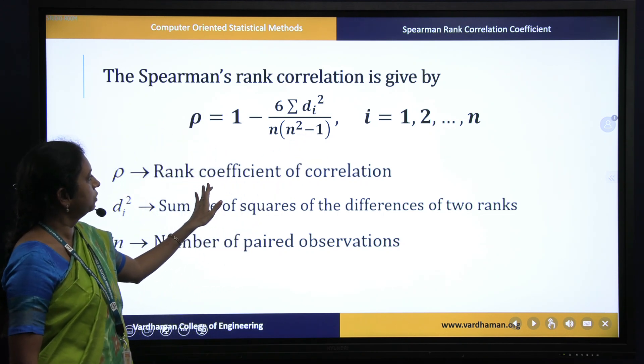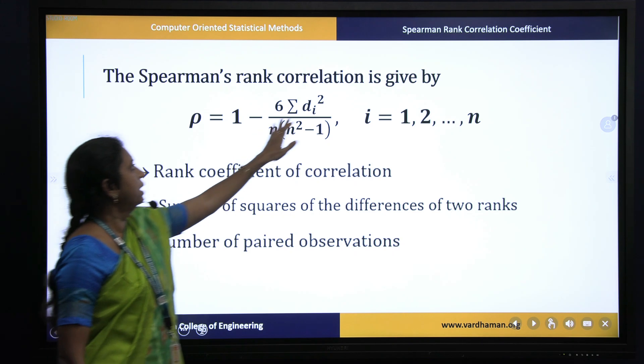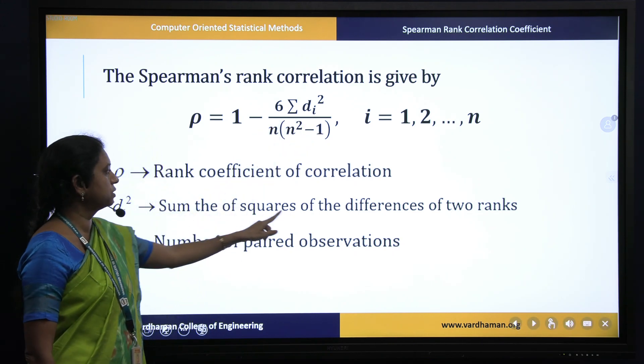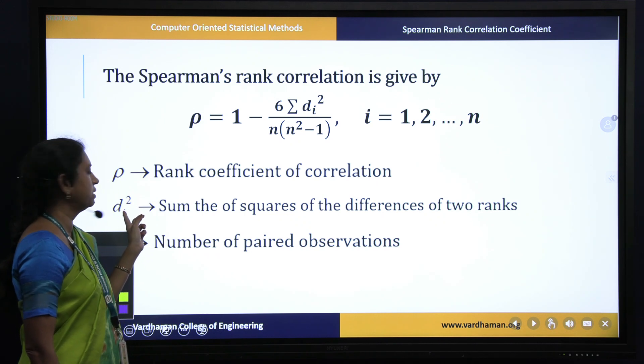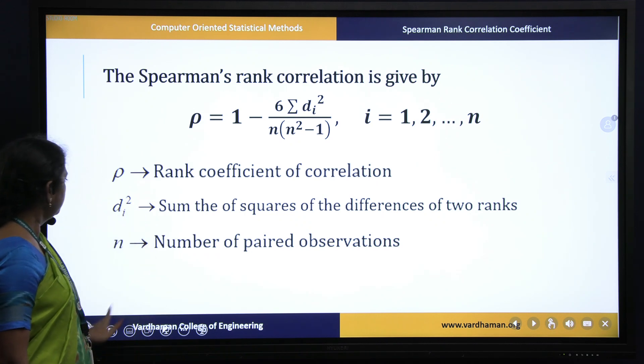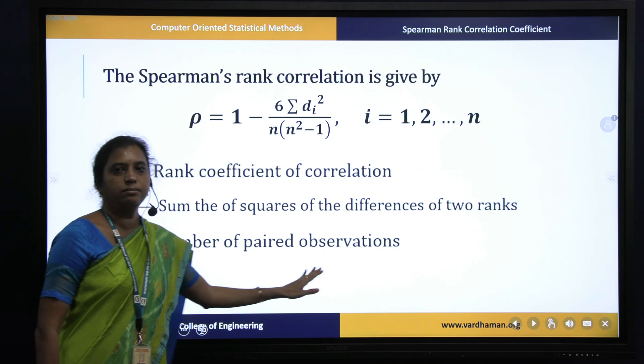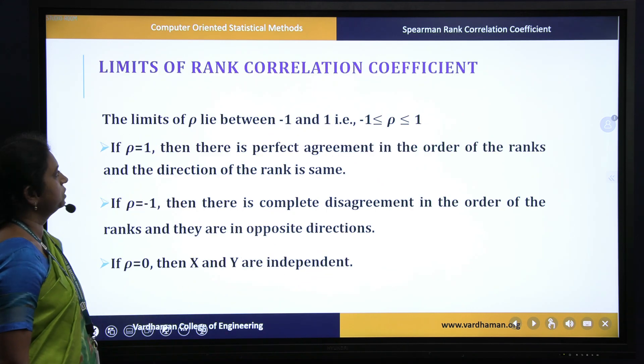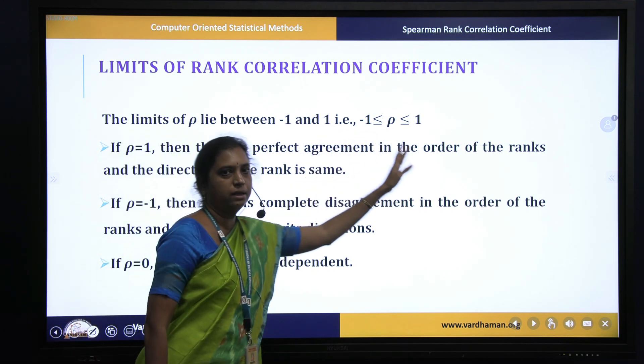Where rho is rank coefficient of correlation, di is the difference between ranks, summation di square is the sum of the squares of these differences, and n is number of paired observations. This rank correlation coefficient should lie between minus 1 and 1.